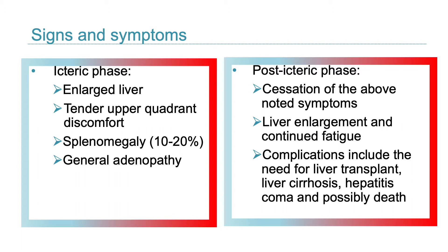In phase 3, the icteric phase, patients may note dark urine followed by pale-coloured stools in addition to predominant GI symptoms and malaise. Patients become icteric and may develop right upper quadrant pain with hepatomegaly. In phase 4, the convalescent or post-icteric phase, symptoms and icterus resolve and liver enzymes return to normal. However, the liver continues to enlarge and patients may be fatigued. Complications include liver transplant, cirrhosis, hepatic coma and possibly death.